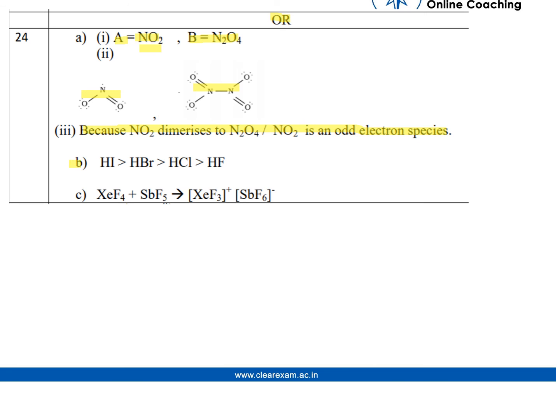Part (b) of the question was we have to arrange in decreasing order of the reducing character. So the decreasing order is: HI > HBr > HCl > HF. Part (c) was that we have to complete the reaction of XeF4 + SbF5.